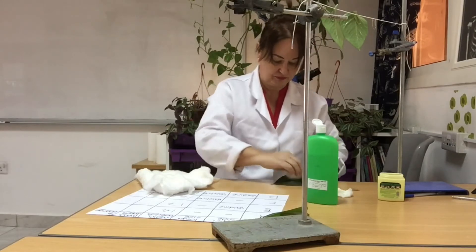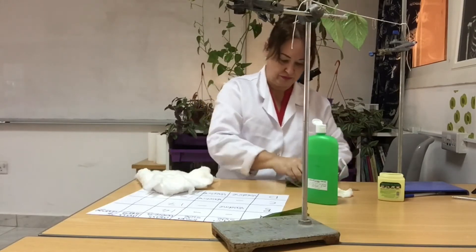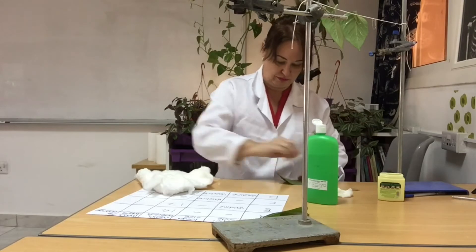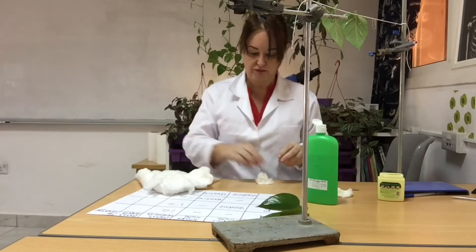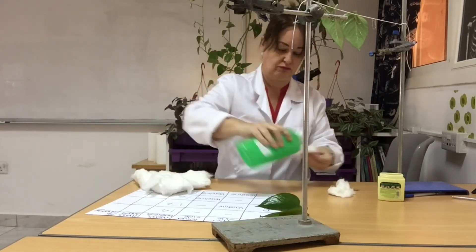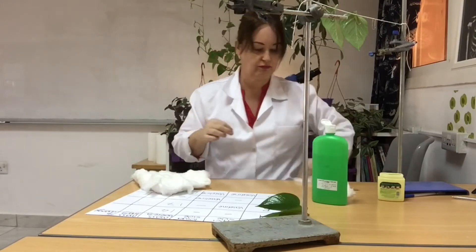I'm rubbing it off with cotton wool. I'm even going to use it on leaf A, which didn't have any Vaseline on it, just to make sure that everything I do for each of the leaves is exactly the same.